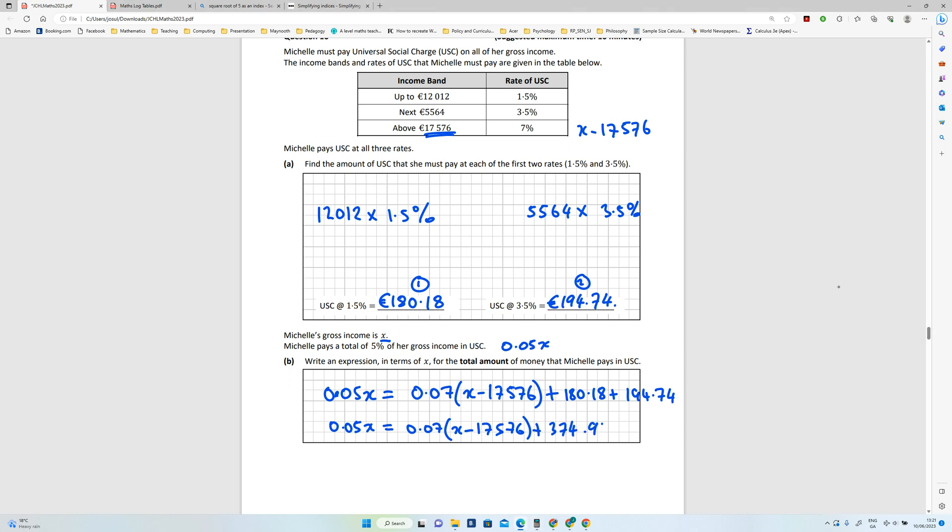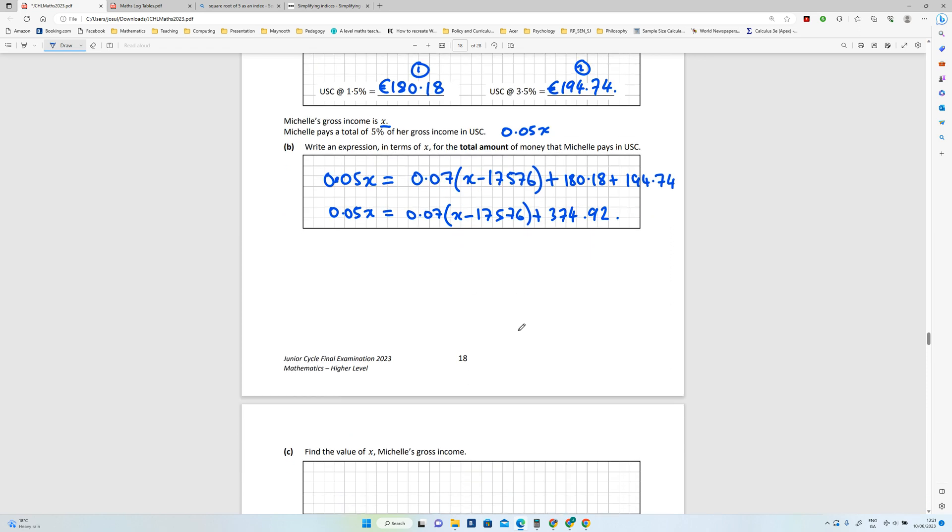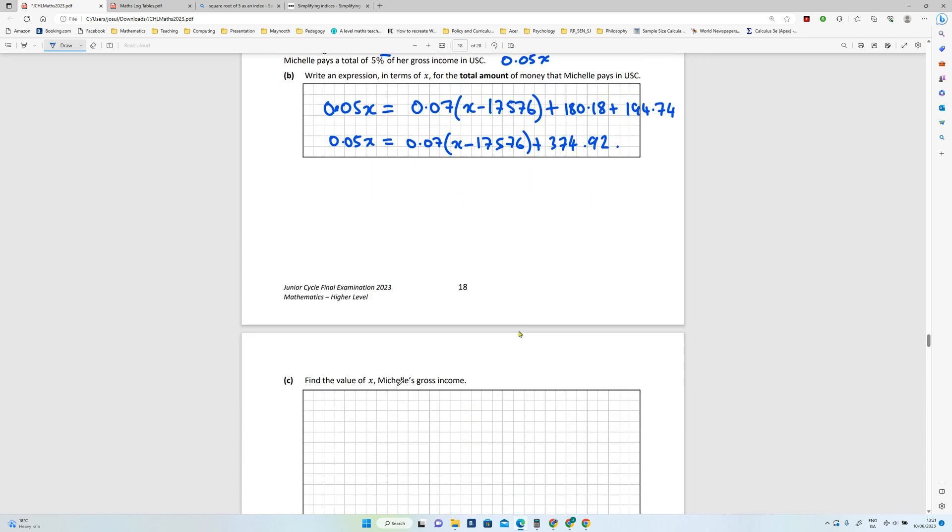Okay, find the value of X, Michelle's gross income. So I'm going to write my expression again: 0.05X equals 0.07(X minus 17,576) plus 374.92.